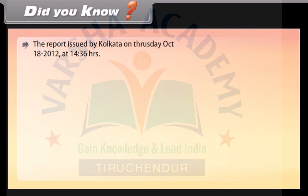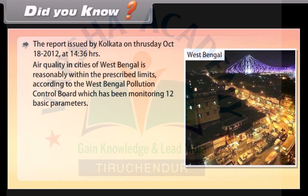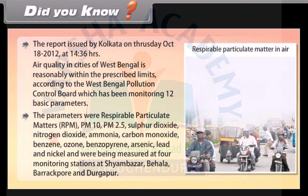A report issued from Kolkata on Thursday, October 18, 2012 states that air quality in cities of West Bengal is reasonably within the prescribed limits, according to the West Bengal Pollution Control Board, which has been monitoring 12 basic parameters. The parameters monitored were: respirable particulate matter (RPM), PM10, PM2.5, sulfur dioxide, nitrogen dioxide, ammonia, carbon monoxide, benzene, ozone, benzopyrene, arsenic, lead and nickel. These were measured at four monitoring stations at Shyam Bazar, Behala, Barrackpur and Durgapur.